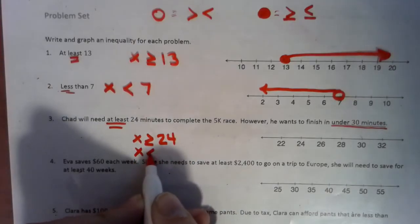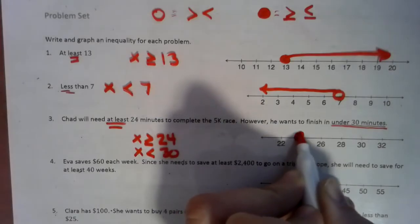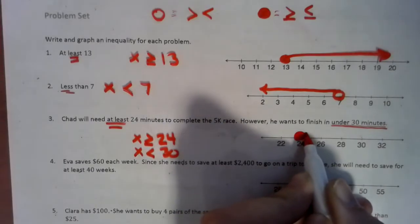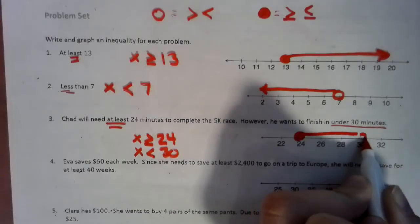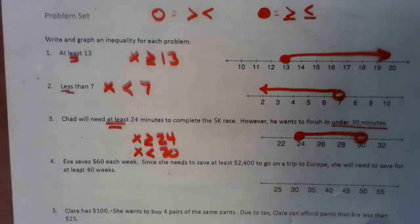So x has to be less than 30. So that means he needs at least 24, so he can go all the way up, but it can't go beyond 30. Okay, so that one's a little weird. We don't usually do too many of those in 6th grade, but that's kind of how it looks.